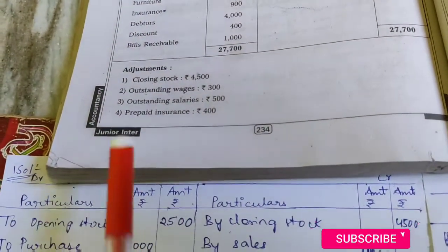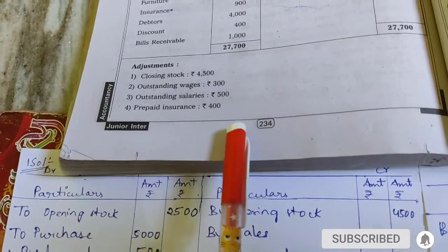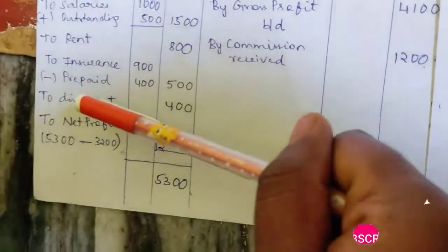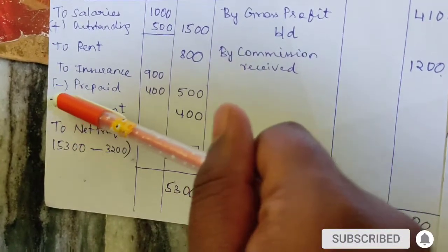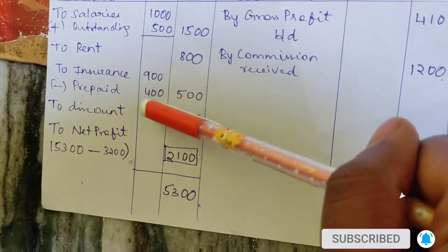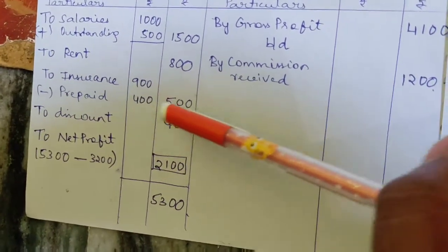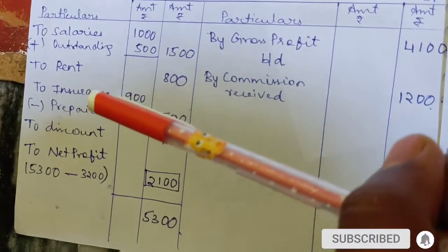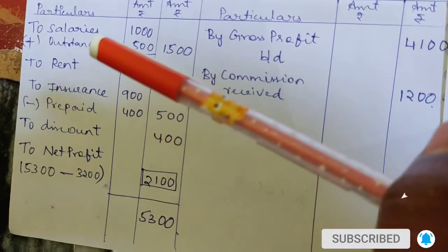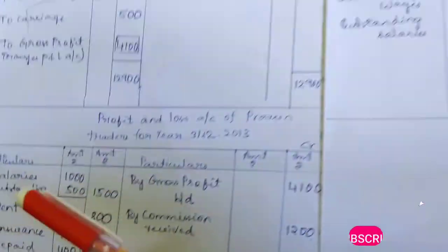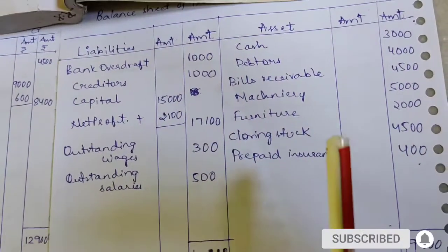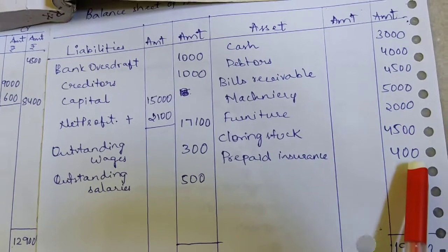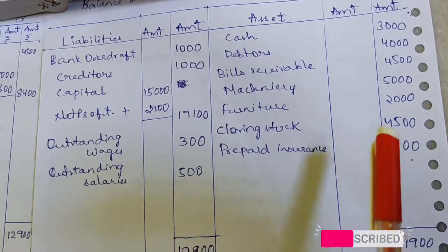Next adjustment: prepaid insurance 400. For prepaid items, we deduct from the insurance amount. So 900 minus 400 equals 500 — that goes to the P&L account. The prepaid insurance amount of 400 goes second time to the asset side of the balance sheet as prepaid insurance.